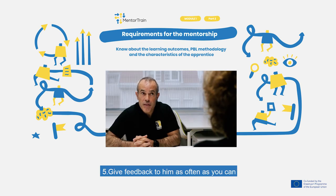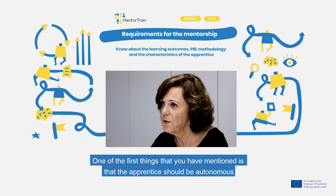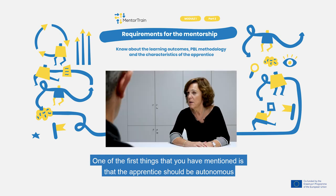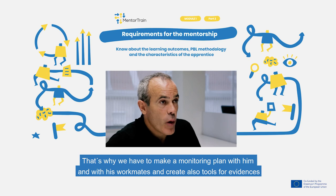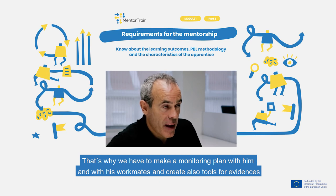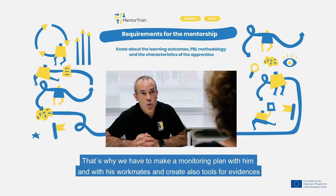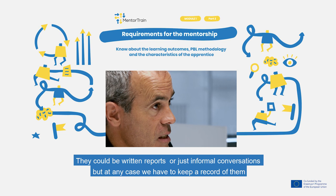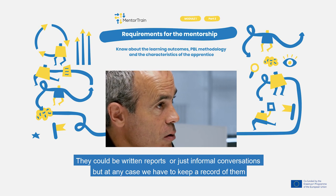Fifth, give feedback to him as often as you can. And sixth, enroll him in a work team. You mentioned the apprentice should be autonomous, but what if he does something wrong and nobody notices? That's why we have to make a monitoring plan with him and with his workmates, and create tools for evidences — written reports or informal conversations, but in any case we have to keep a record of them.